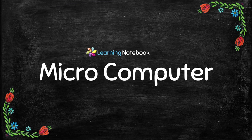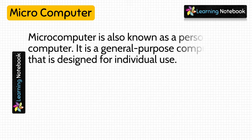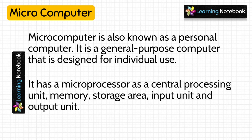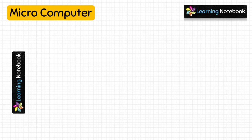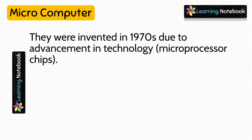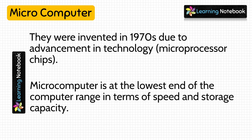The last type of computer based on size is microcomputer. Microcomputer is also known as a personal computer. It is a general-purpose computer designed for individual use only. It has a microprocessor as a central processing unit, memory, storage area, input unit, and output unit. These computers were invented in the 1970s due to advancement in technology. Microcomputer is at the lowest end of the computer range in terms of speed as well as storage capacity.